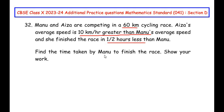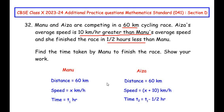We have to find how much time was taken by Manu to finish the race. Let me write down the details for Manu and Aiza in terms of distance, time, and speed. For both of them the distance travelled is the same: 60 km. We consider Manu's speed as x km per hour, and since Aiza's speed is 10 km per hour greater, her speed is x plus 10 km per hour. The time taken by Manu is t1 hours, so Aiza's time is t1 minus half hours.